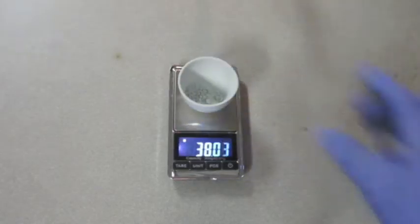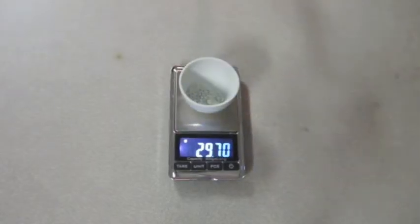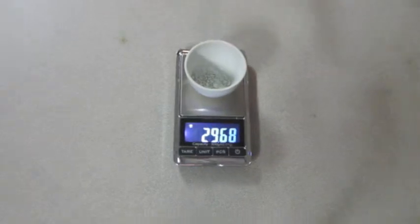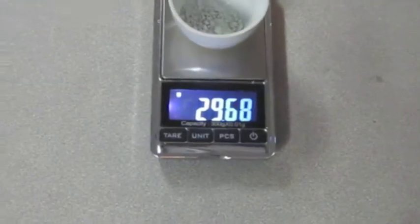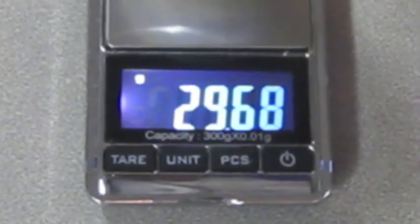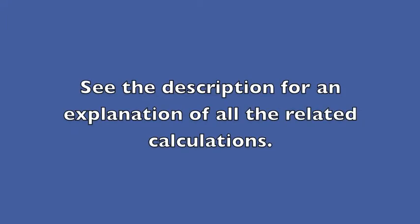Once all of the water is gone, let the crucible cool down and then re-weigh it. From this mass, you can determine the formula of your hydrate. After performing all of the necessary calculations, I determined that the molar ratio of water to copper sulfate was 5 to 1, which makes sense as it was labeled as a pentahydrate.